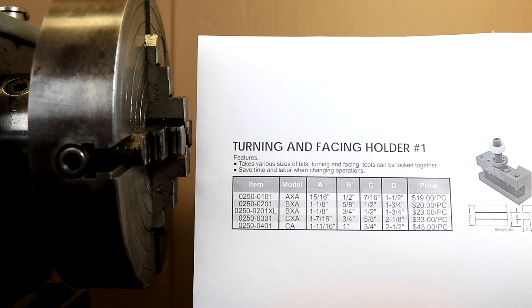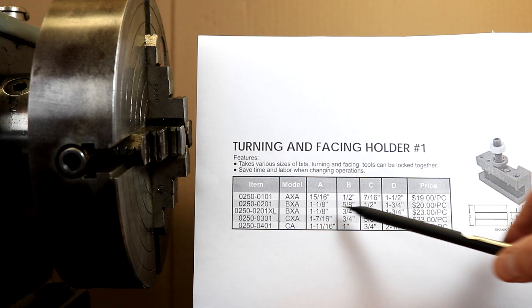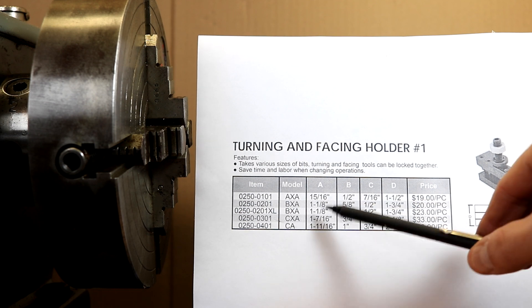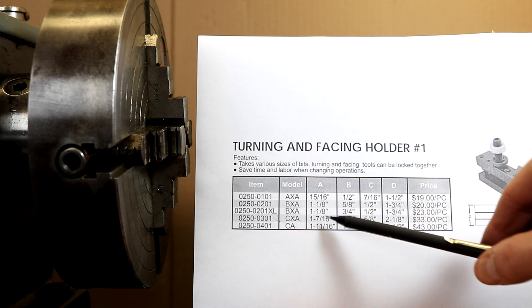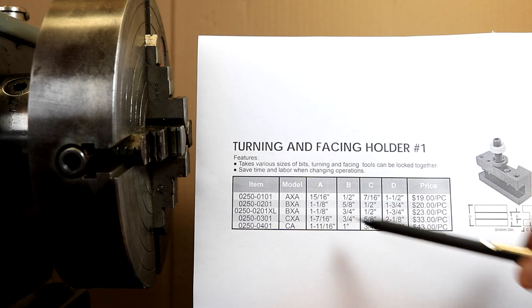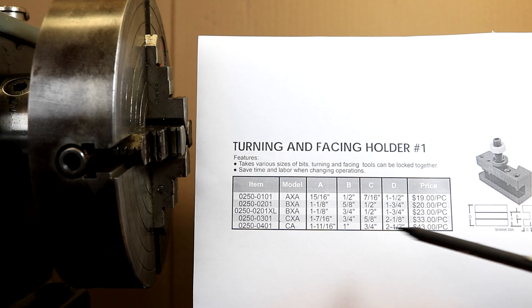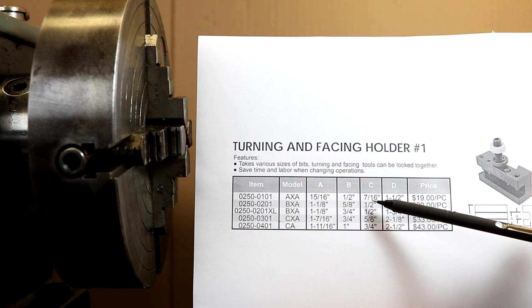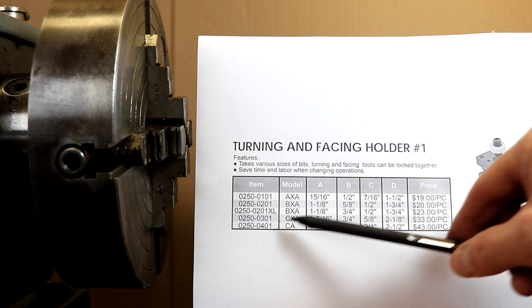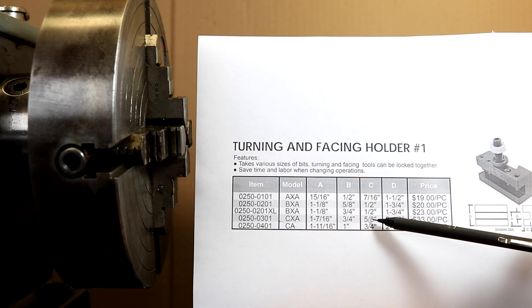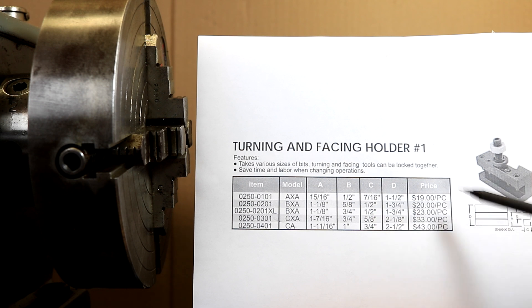And here are the manufacturer's specifications for the tool holder. The BXA model has a B value, so the height up and down here of 5/8ths. So in theory you could hold a 5/8ths tool bit. There's an extra large size as well that would accommodate 3/8ths. The depth seems to be consistent with half an inch right there for both the 201 and the 201XL. Looks like the maximum size bit that can be accommodated in an AXA model is half inch with a 7/16ths depth of the throat.